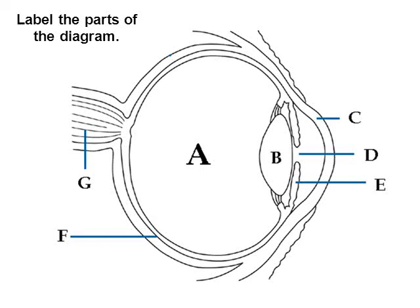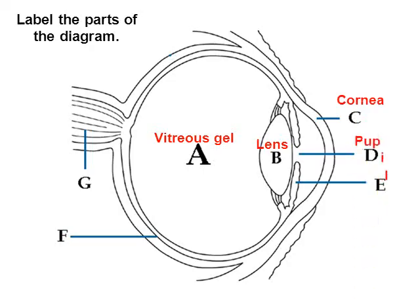Here's the final question. Pause the video and try to identify all of these parts: A, B, C, D, E, F, and G. For part A — the vitreous, vitreous gel, or vitreous humor. For part B — the lens. For part C — the cornea. For part D — the pupil. For part E — the colorful, pretty part of the eye, called the iris. For part F — the rods and cones at the back of your eye, called the retina. And for part G — the nerve that leads into the brain, called the optic nerve.